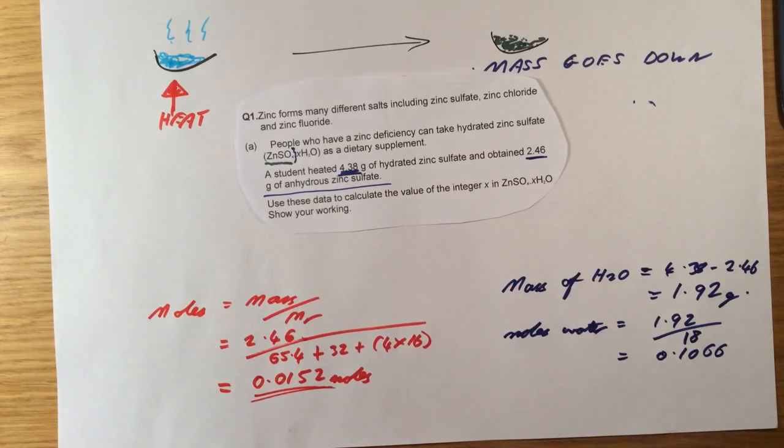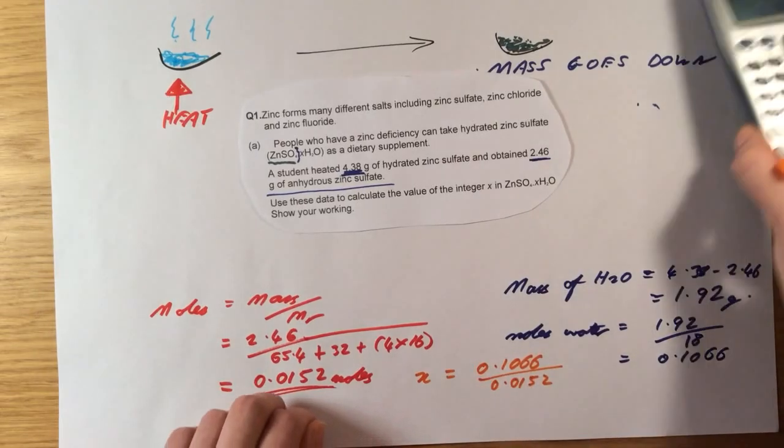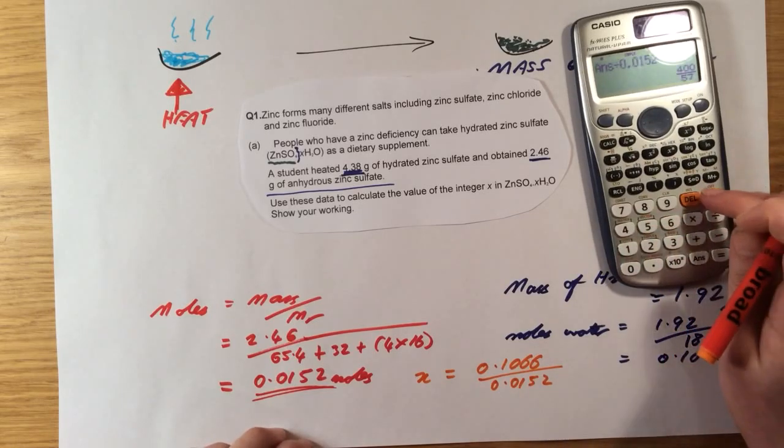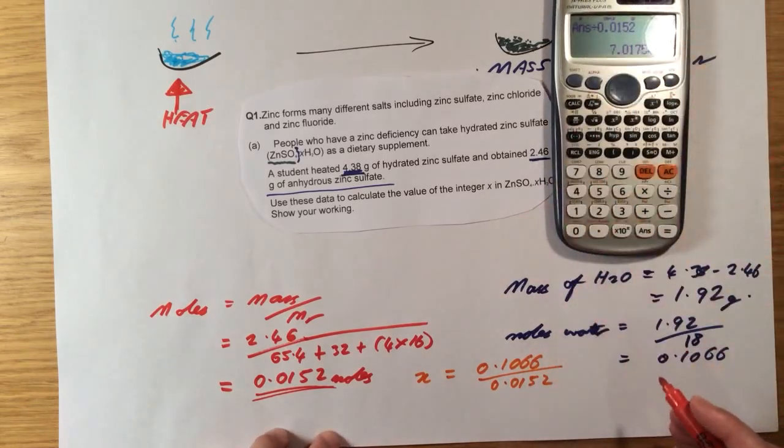So let's calculate the value of X. I simply need to work out the ratio of this to this. So what I'm going to do is 0.1066, which is the number of moles of water, divided by 0.0152. And I get 7 and a bit.